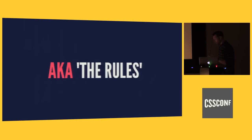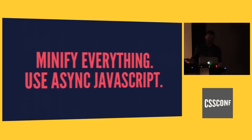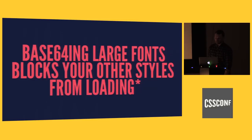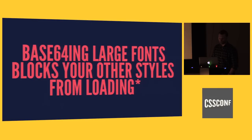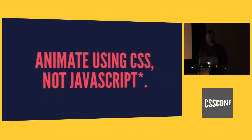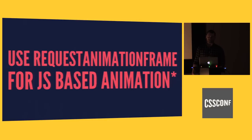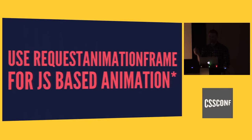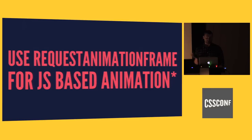So what do we already know? What are the rules of engagement? What do we do to make sites fast? We minify everything. We use async JavaScript. We know that base64 in large fonts can block other styles from loading — if you load every font in the world in base64, you're basically blocking the browser. We should animate using CSS and not JavaScript. We should use requestAnimationFrame for JavaScript-based animation, which takes the time of when the browser would naturally paint. This is really great for Canvas or for WebGL.